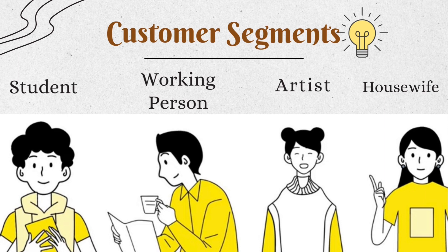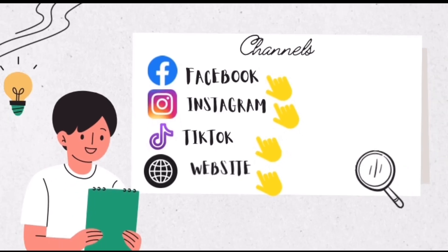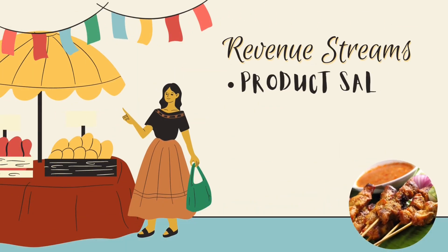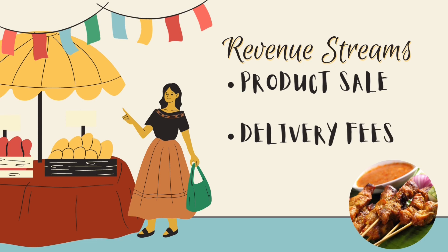Our customer segments include students, working persons, artists, and housewives. Everyone can be our target customer because traditional cakes are usually a daily food for breakfast and tea time. Our channels include social media platforms like Facebook, Instagram, and TikTok, as these platforms give a good impact for our marketing. Our revenue stream generates profit from selling products and delivery fees.